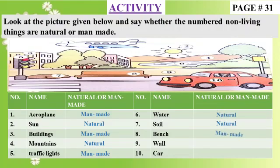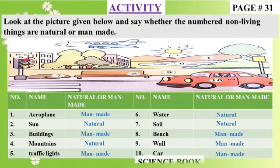Bench — man-made non-living thing. Wall — man-made non-living thing. Car — man-made non-living thing. Do exercise in science book.